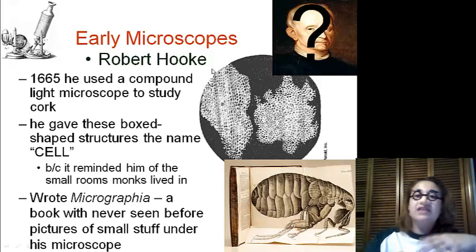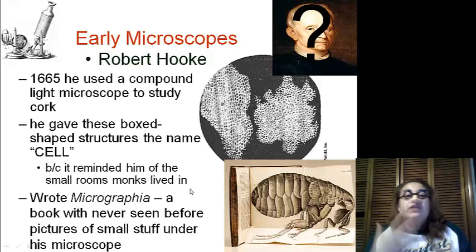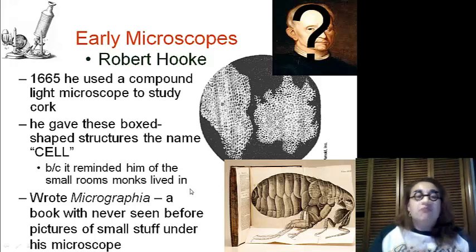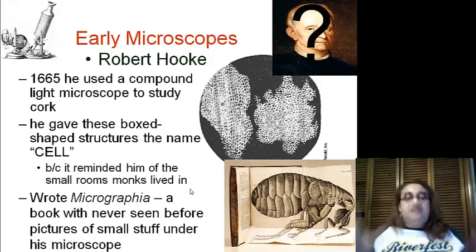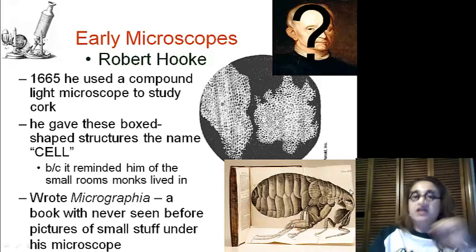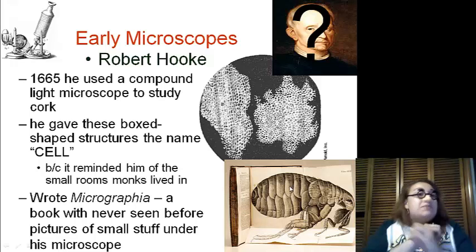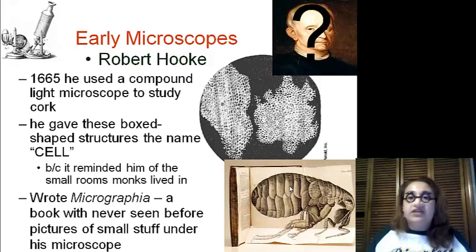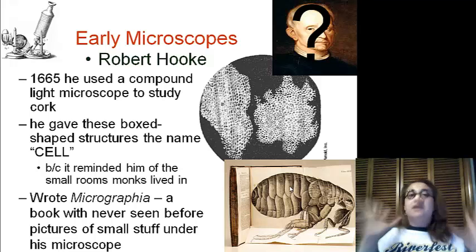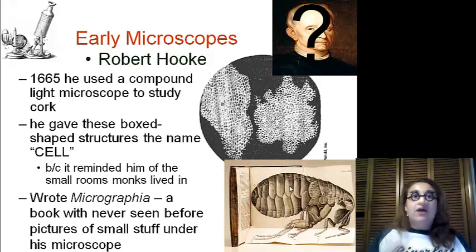He also was able to look underneath his light microscope and created the book Micrographia, which showed never-before-seen pictures of small stuff underneath his microscope, such as this flea here, in great detail. People had never seen this before, and everybody could read this book because it was pictures.